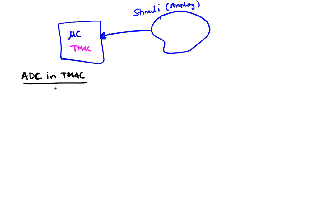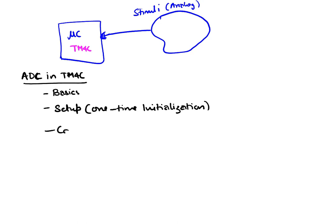First we'll get some basics about it, look at the details and features of it, then we'll look at the setup — this is the one-time initialization — and then we'll look at how to capture a single sample. That is, if I want to read an analog value, what programming steps do I perform in order to capture a single sample?